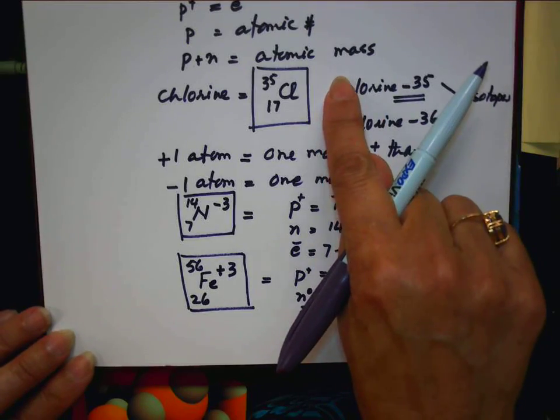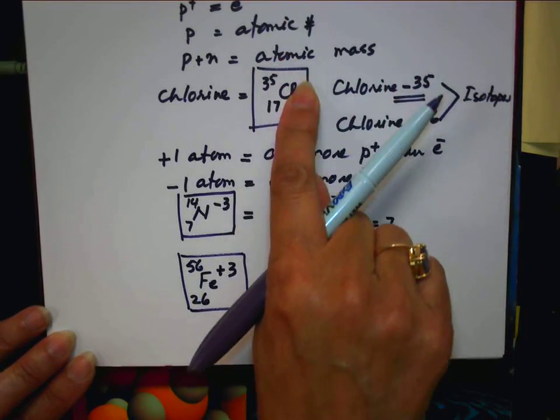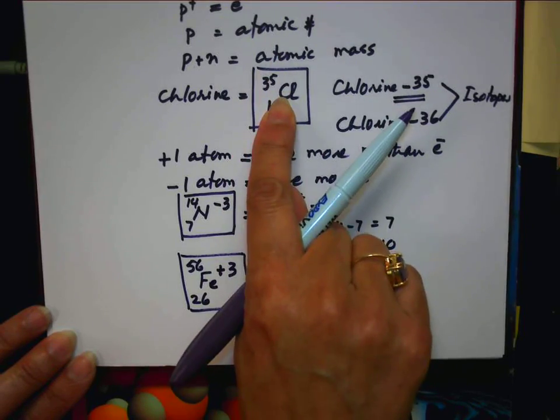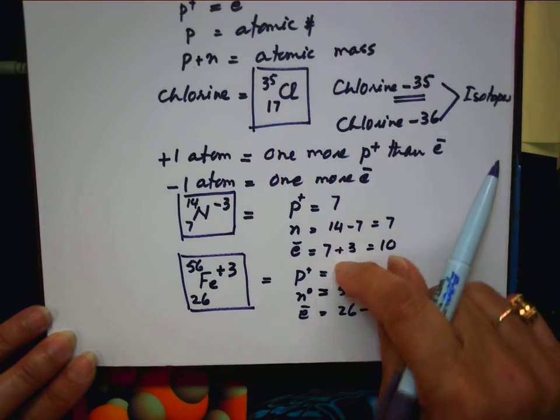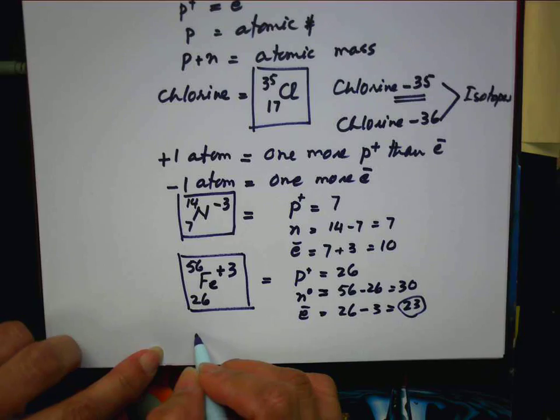So when you see the name, you should be able to find out the symbol like this. If you see the symbol, you should be able to put the protons, neutrons, and electrons. Either they can be cation or anion.